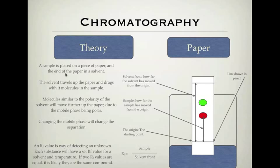The sample is placed on a piece of paper and the end of the paper is placed in the solvent. We draw a line marked as the origin in pencil so it doesn't move with the compounds. The solvent travels up the paper and drags the different molecules in the sample with it. Molecules with a similar polarity to the solvent will move further up the paper. Changing the mobile phase will change the degree of separation.